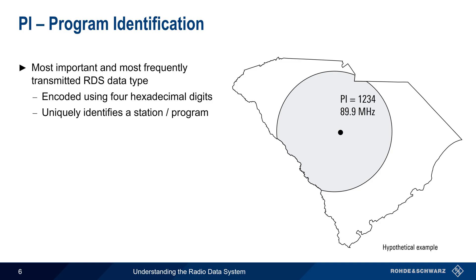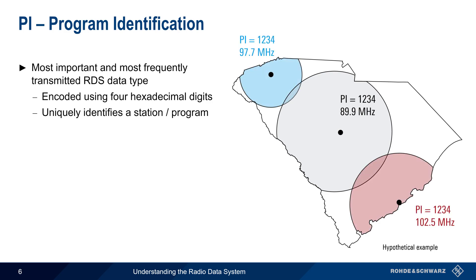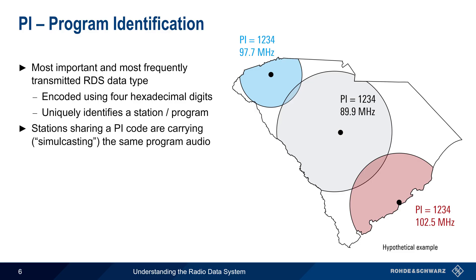PI can, however, be shared among transmitters. In this example, all three of these transmitters are on different frequencies, in different geographical areas, but they share the same PI code, because they are all simulcasting the same program — that is, the audio they are sending is the same.